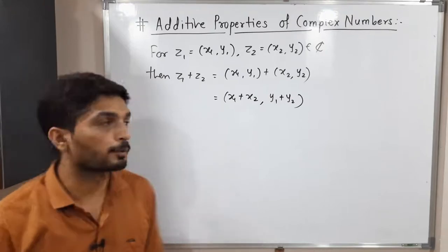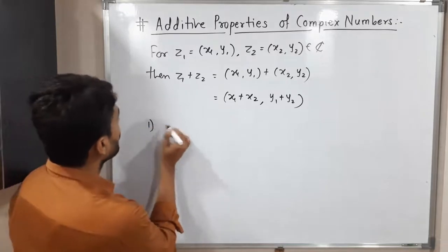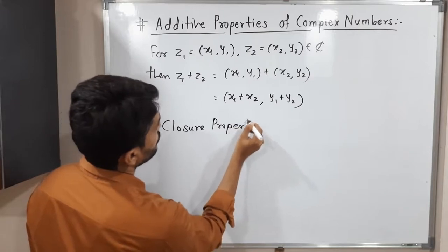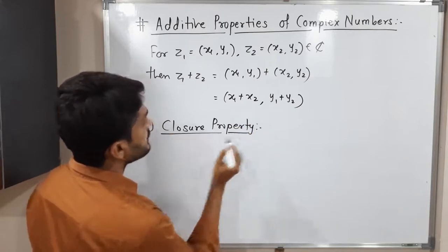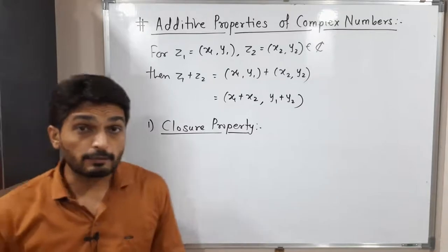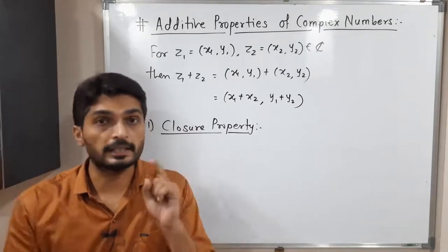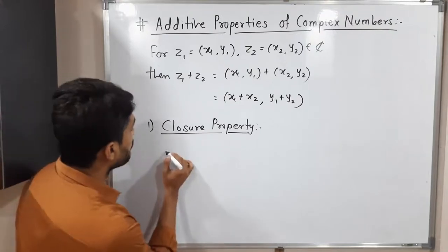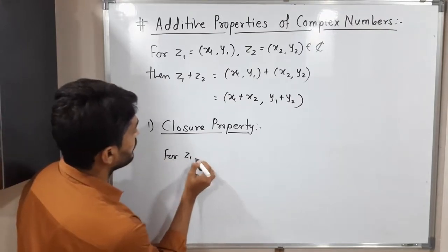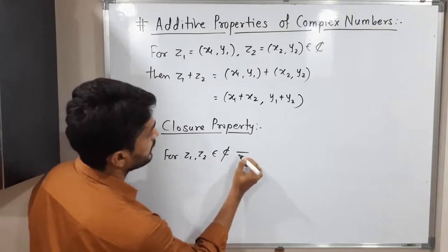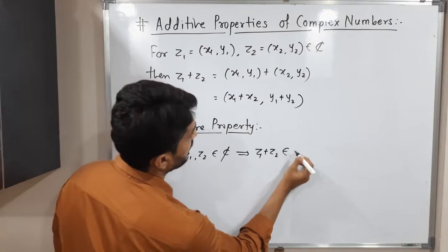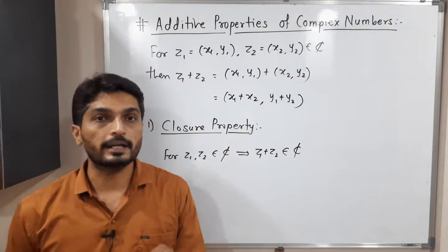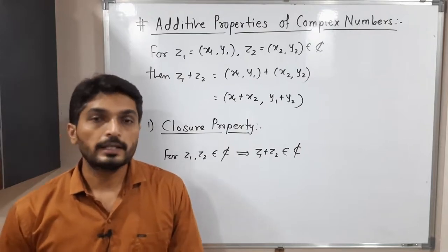The first property is the closure property — addition is a binary operation. It means if you take two complex numbers and add them, the result is again a complex number, an element of C. So for Z1, Z2 in C, Z1 plus Z2 is again a complex number. That is called the closure property.